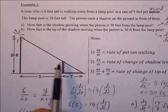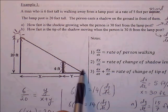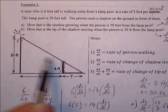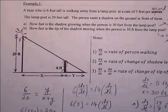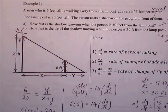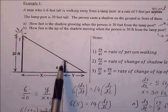A man who is 6 feet tall is walking away from a lamppost at a rate of 5 feet per second. The lamppost is 20 feet tall. The person casts a shadow on the ground in front of them.